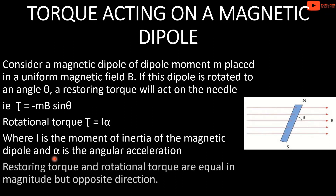The rotational torque and the restoring torque are equal in magnitude but opposite in direction. Therefore, torque equals Iα equals minus MB sinθ.